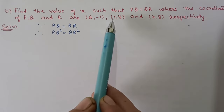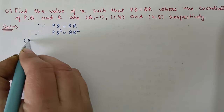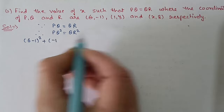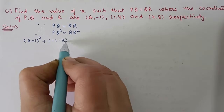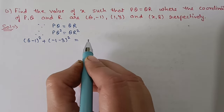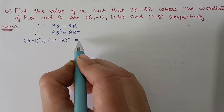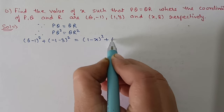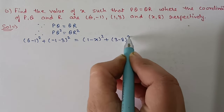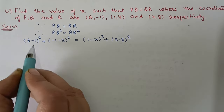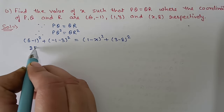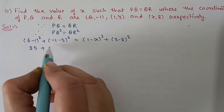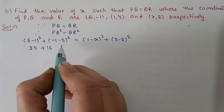For PQ², we take coordinates of P and Q: (6 - 1)² + (-1 - 3)² = (1 - x)² + (3 - 8)². Here 6 - 1 = 5 and 5² = 25; -1 - 3 = -4 and (-4)² = 16.